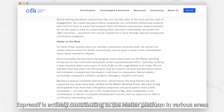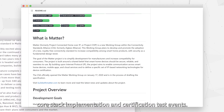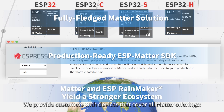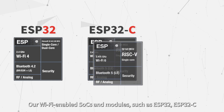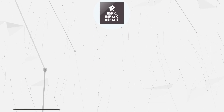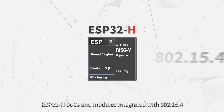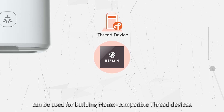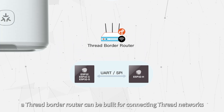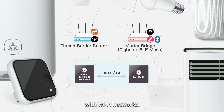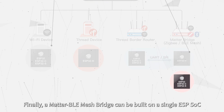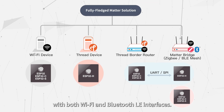Espressif is actively contributing to the Matter platform in areas including protocol formulation, core stack implementation, and certification test events. We have launched a one-stop Matter solution providing devices that cover all Matter offerings. Our Wi-Fi-enabled SOCs and modules such as ESP32, ESP32-C, and ESP32-S series can be used for building Matter-compatible Wi-Fi devices. ESP32-H SOCs and modules integrating 802.15.4 can be used for building Matter-compatible Thread devices. By combining ESP32-H and an Espressif Wi-Fi SOC, a Thread border router can be built to connect Thread networks with Wi-Fi networks. Matter ZigBee bridge devices can also be built to connect Matter and non-Matter networks. Finally, a Matter BLE mesh bridge can be built on a single ESP SOC with both Wi-Fi and Bluetooth LE interfaces.